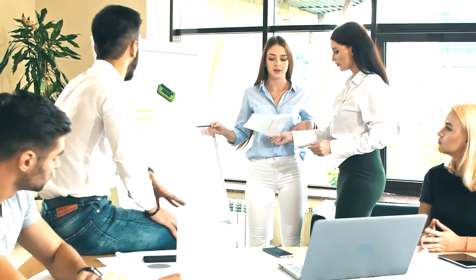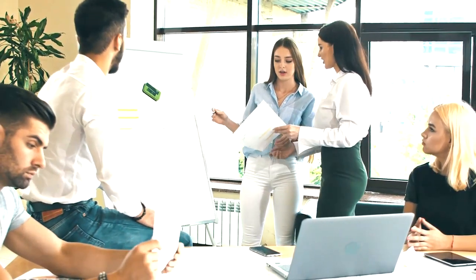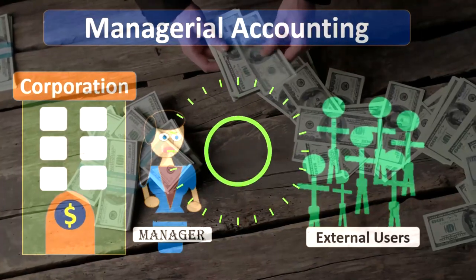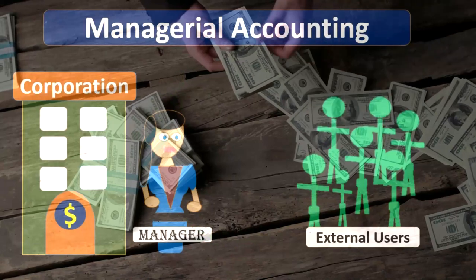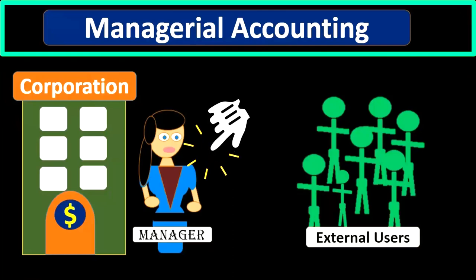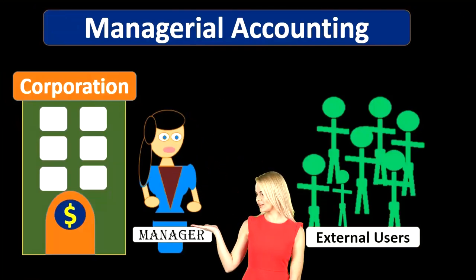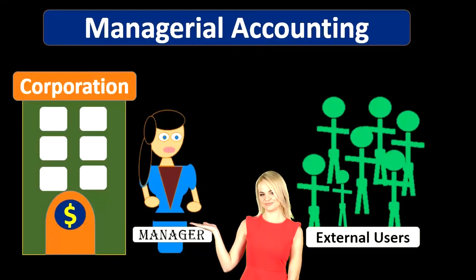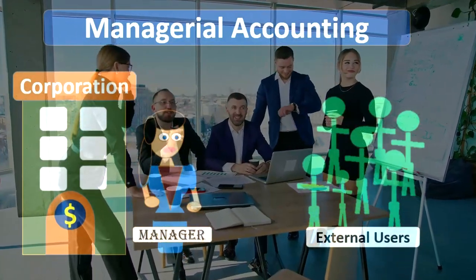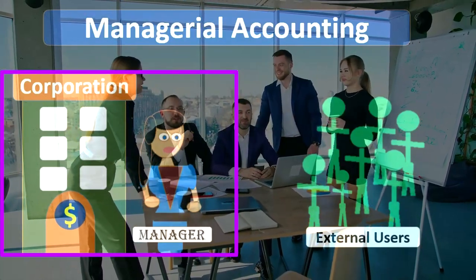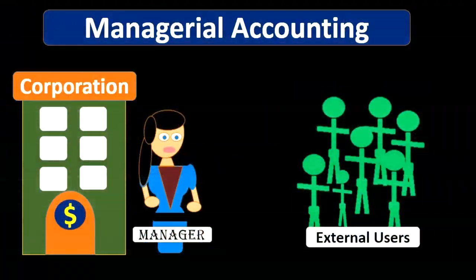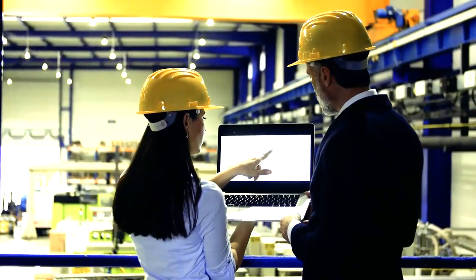When considering managerial accounting, we can compare it to the other major form of accounting, which is financial accounting. There will be overlap between managerial accounting and financial accounting, but the major difference is that our main focus is for management's use — management's goal to make decision-making for the company. So managerial accounting is geared towards decision-making processes, making reports for management.